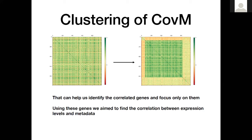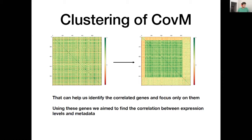We did some clustering to maybe find some gene markers, and 23 centroids of clusters represent 23 genes which could be markers related to fat level. As for future plans, this clustering part is for looking at these genes more carefully. And I guess that's all — thanks.